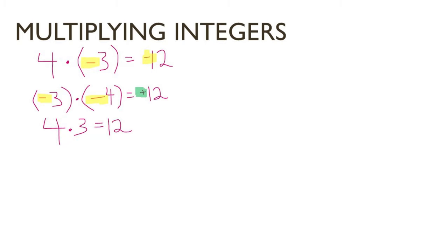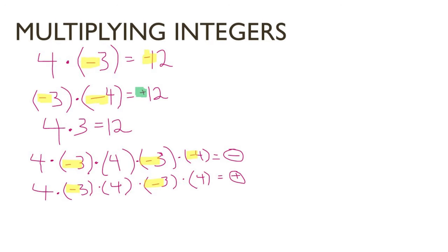4 times 3 as regular will equal 12. And if we have a big number here that has lots of factors, then the way that we can tell whether it's a positive or negative answer is by looking at the amount of negative factors there are. If there is an odd number, the answer is negative. If there is an even amount of negative factors, then the answer is positive.